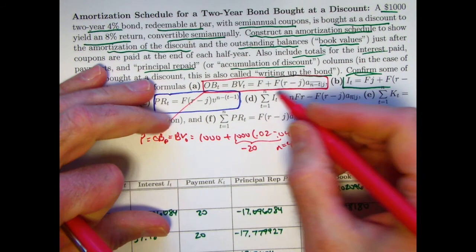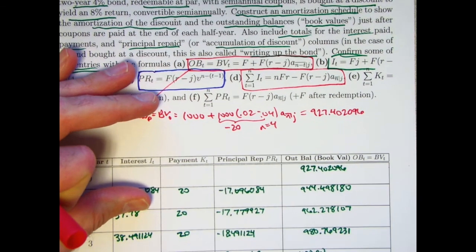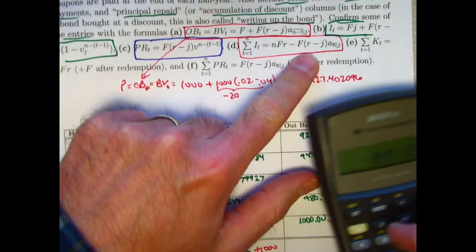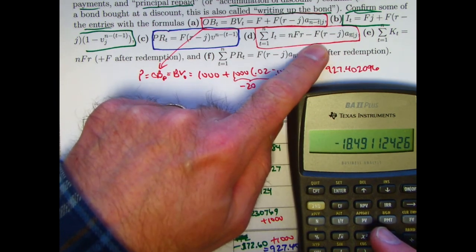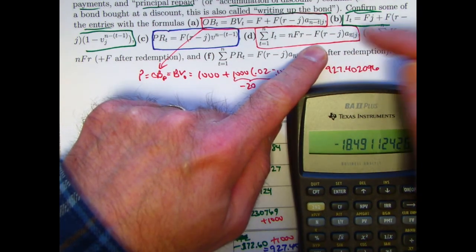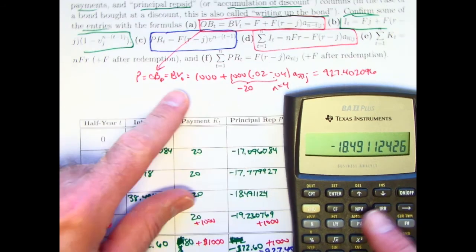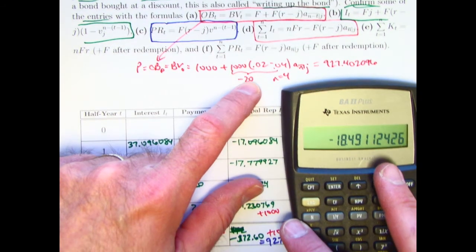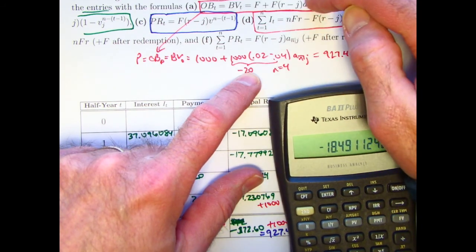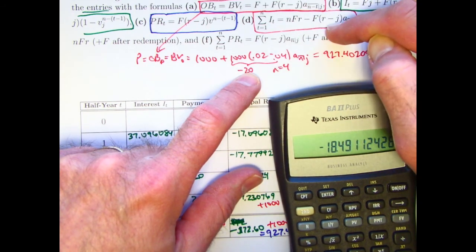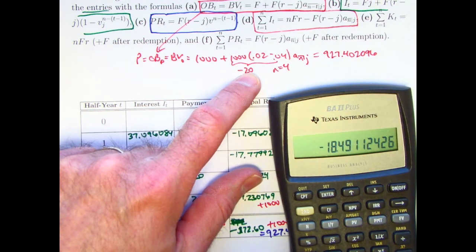We've got the total of all the interest paid equals that. Calculating this part first. I guess we already did that. We did it when, we did it at the beginning when we used n equal to 4 here to find the price. It was a negative quantity up here. Here we're subtracting that negative quantity. So we're ultimately adding the corresponding positive quantity.